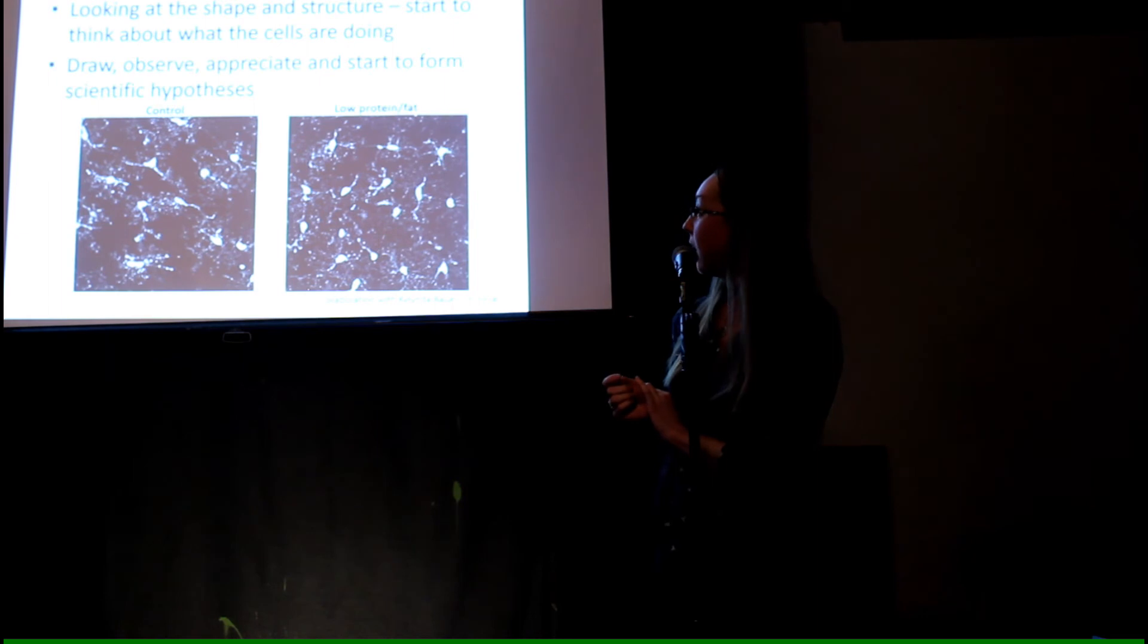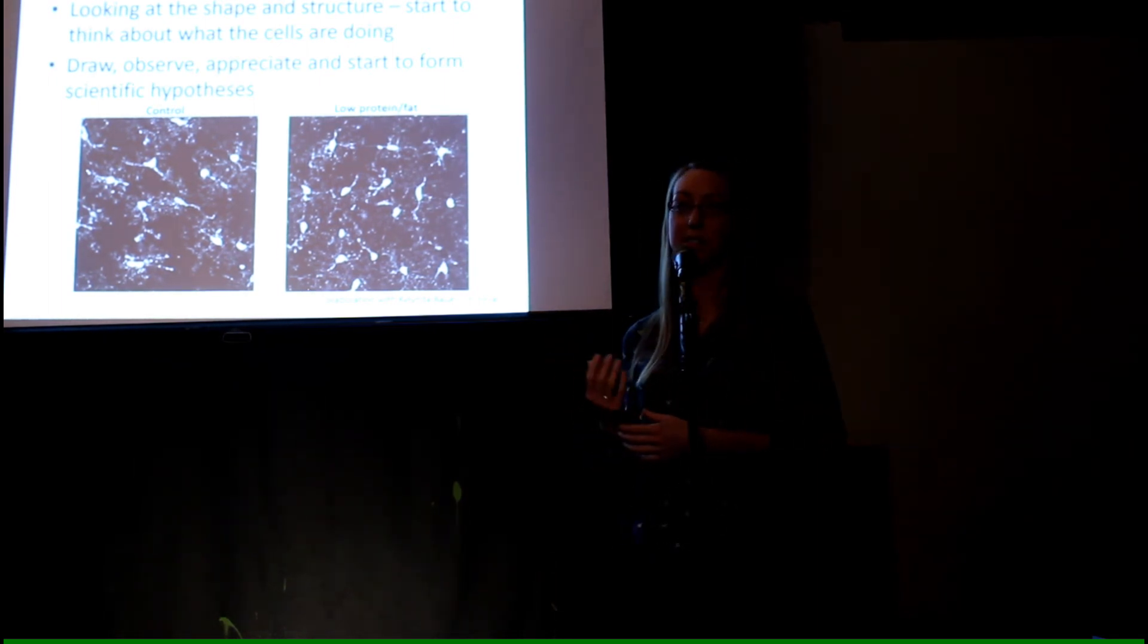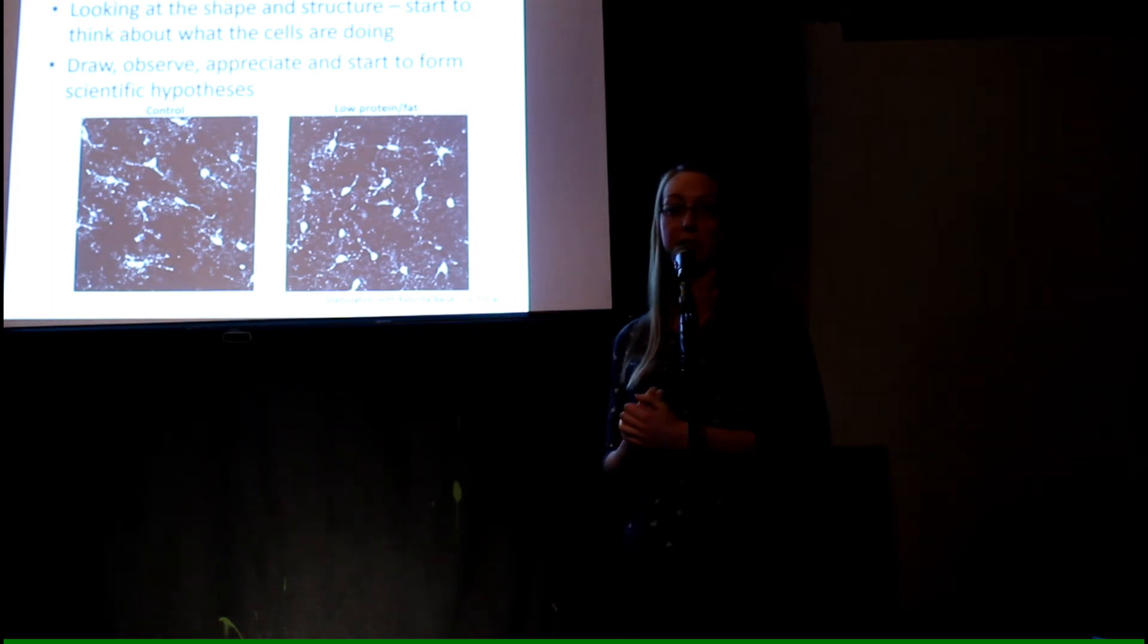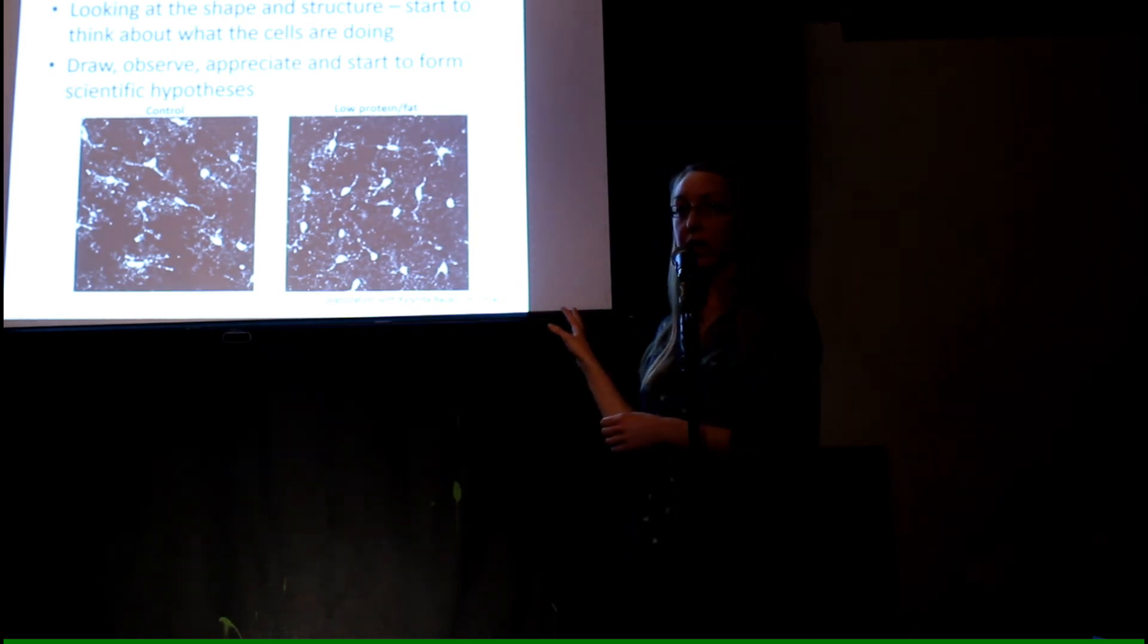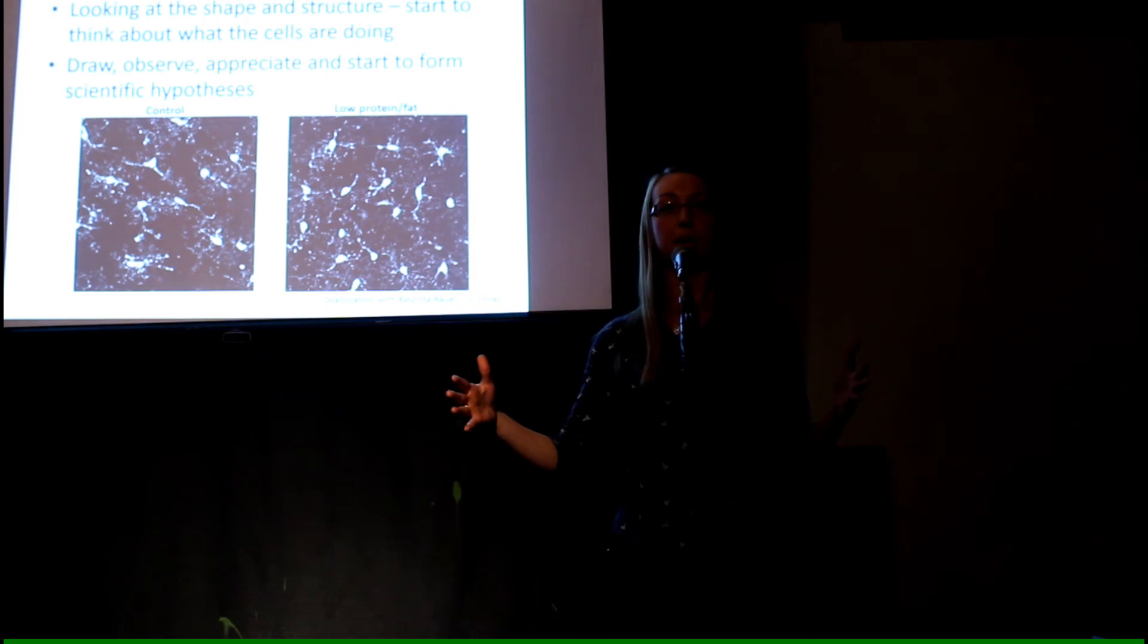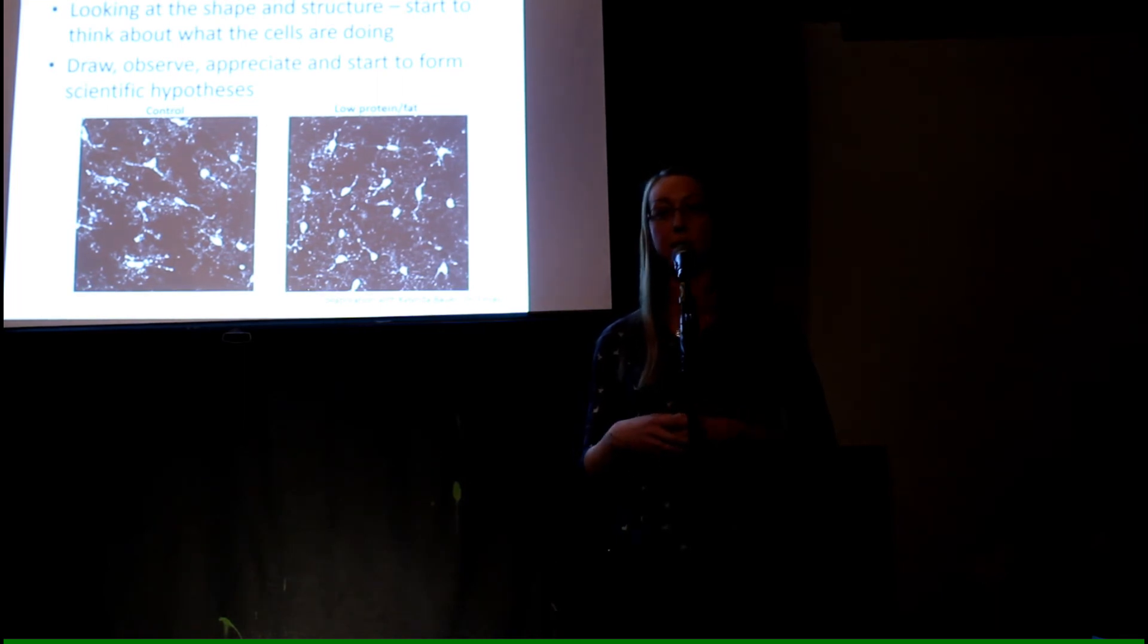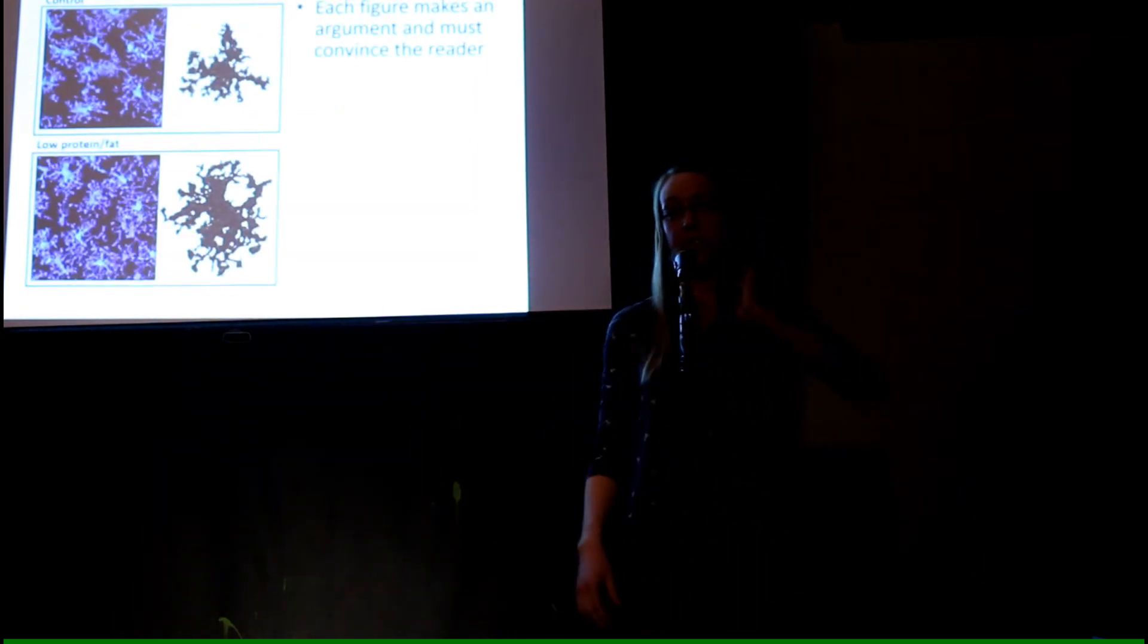I don't draw, I don't consider myself an artist, but by taking these images, I feel like you're immersing yourself and observing the tissue, and you start to think of what might be happening to cause changes. We've noticed that the cells on the right, the malnourished, have longer processes. They're covering more of the brain tissue. Clearly something is different, and by looking at them, we're trying to decide what it is that they're actually doing in this malnourished brain, and then perform experiments to test them.